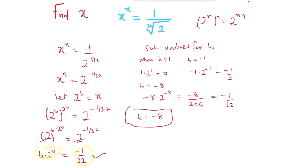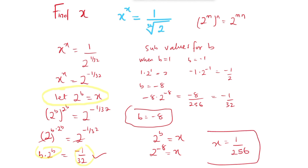Substituting the value of b back into the equation — we want to find x. From the circled equation, 2 raised to power b equals x, which is the same thing as 2 raised to power negative 8 equals x. Finally, x equals 1 over 256. That is the value of x.